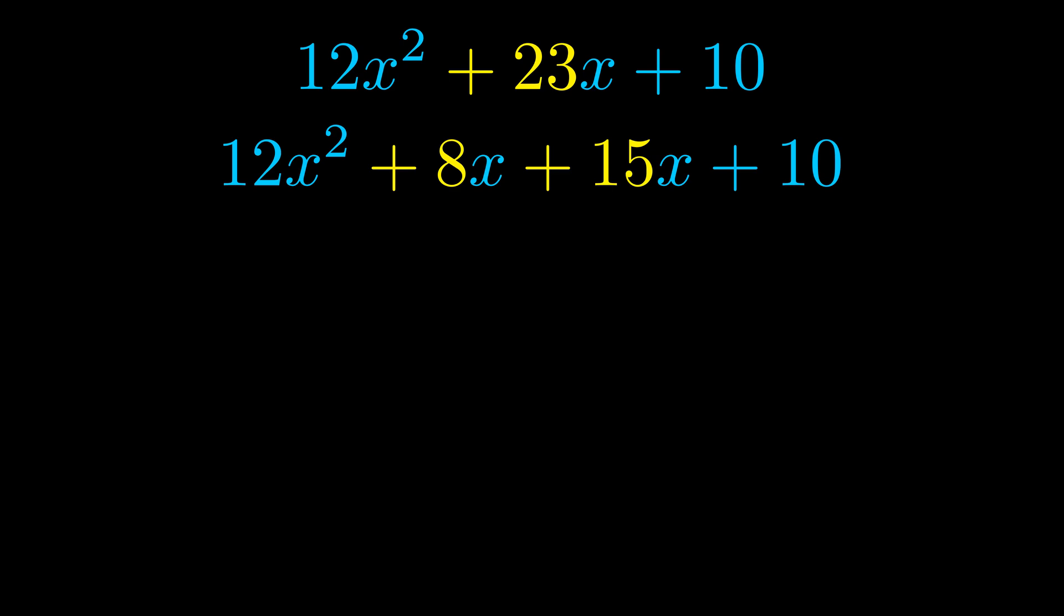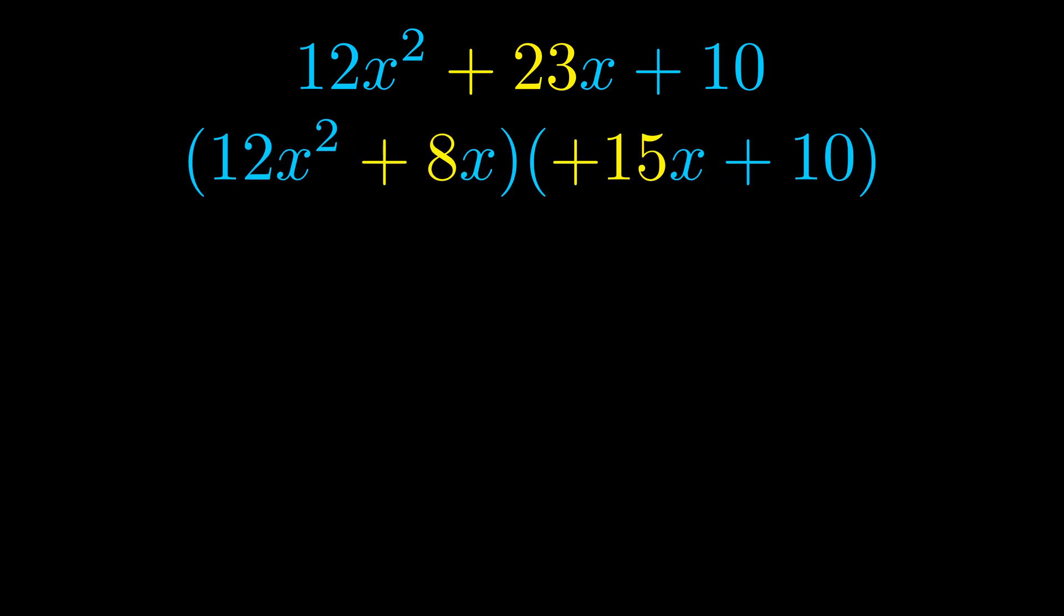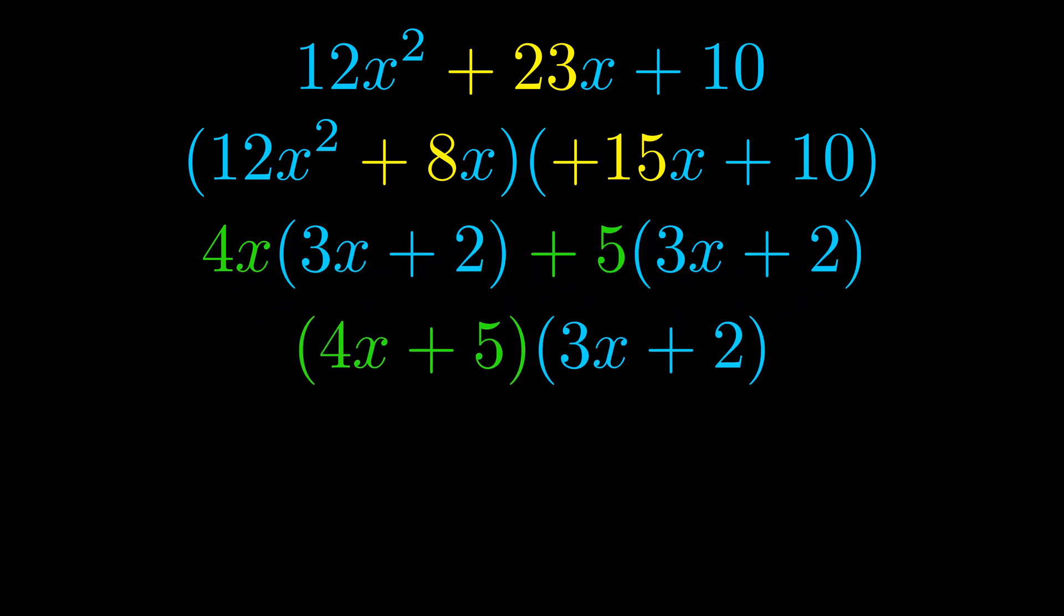Once we've done this we go ahead and put parentheses around the first term and the last term. And we do that so that we can take the greatest common factor out of both terms. We can see the greatest common factor is now outside in green. Notice also how what remains inside of the parentheses is the same in both cases. The blue values are the same.